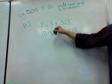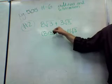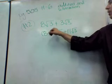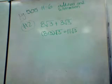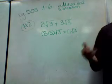Take root 3 out, because you could go back the other way. If you wanted to distribute this, root 3 times 3 is 3 root 3, and root 3 times 8 is 8 root 3.